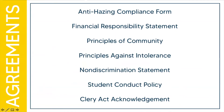Every officer is responsible for electronically signing seven officer or signer agreement forms to become an authorized officer. The forms are: the anti-hazing compliance form, the financial responsibility statement, principles of community, principles against intolerance, non-discrimination statement, student conduct policy, and the Clery Act acknowledgement. As an officer, it is important that you read thoroughly through each of these forms.